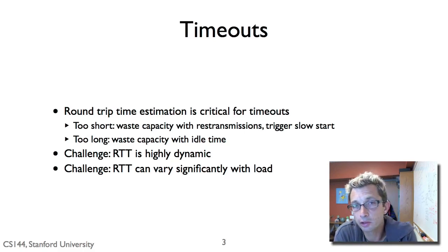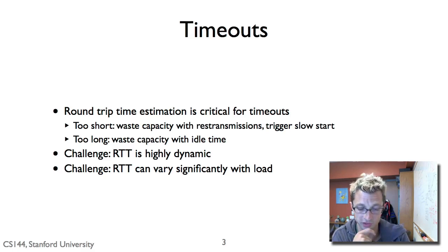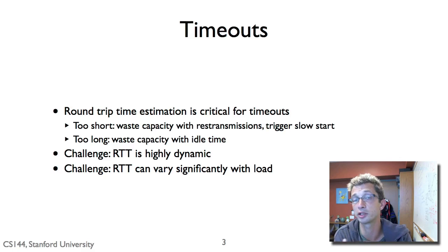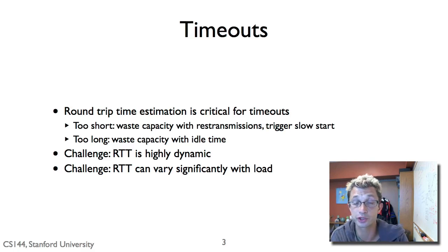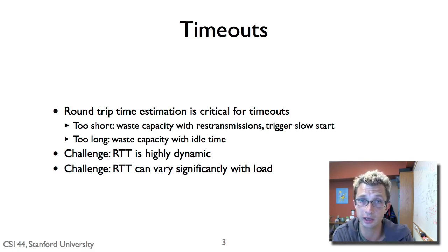Estimating your round-trip time is really critical for retransmissions and timeouts. If your RTT is estimated too short — shorter than what it actually is — then you're going to waste capacity. You'll think a packet wasn't successfully received when it has been, and retransmit unnecessarily, triggering slow start. So if I have a nice window size and I'm sending data but my RTT estimates are too short, I'm entering slow start unnecessarily. If the RTT estimation is too long, that's also a problem — you could have retransmitted a long time ago, but if you estimated five minutes when it's only a few hundred milliseconds, your protocol will sit dead for five minutes before issuing a timeout.